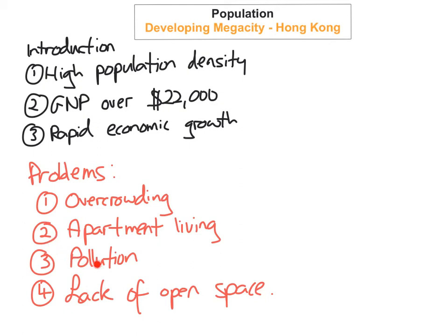There's loads of pollution — noise pollution, air pollution, and visual pollution. Noise pollution from traffic and people is widespread, there's an abundance of litter and garbage in the streets from industrial and domestic waste, and the bays and beaches are heavily polluted.